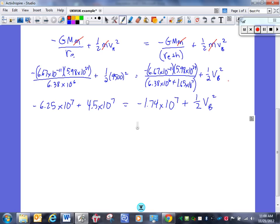All right. And now it's really just plugging things into the calculator. You plug all these numbers into the calculator. You get negative 6.25 times 10 to the 7th. You plug this into the calculator. 4.5 times 10 to the 7th. Plug all that into your calculator. Negative 1.74 times 10 to the 7th. And then we still have the one-half speed at B squared.